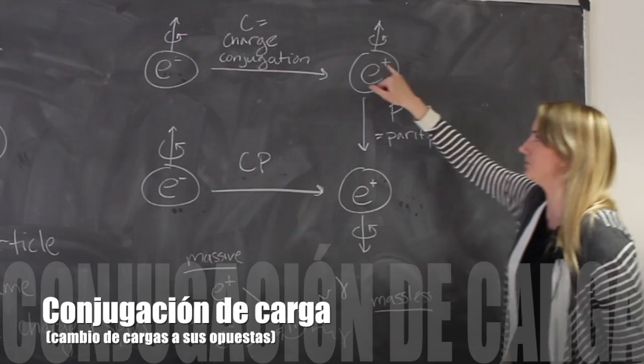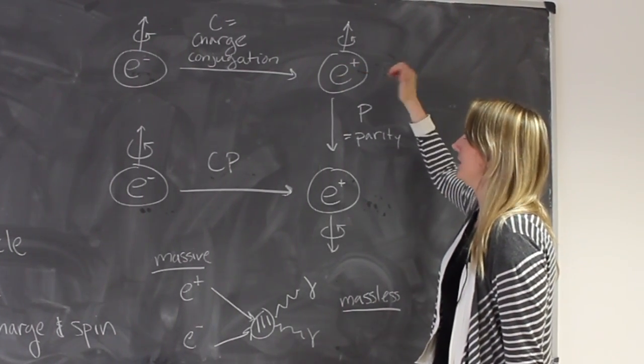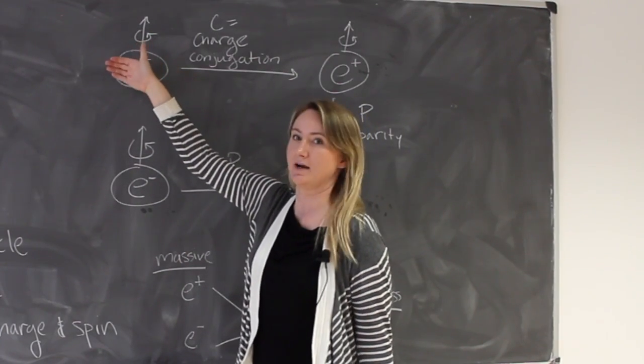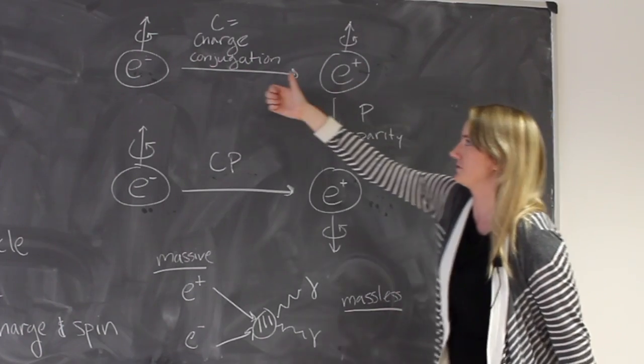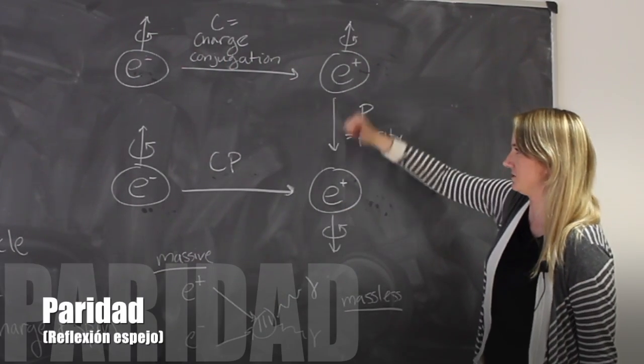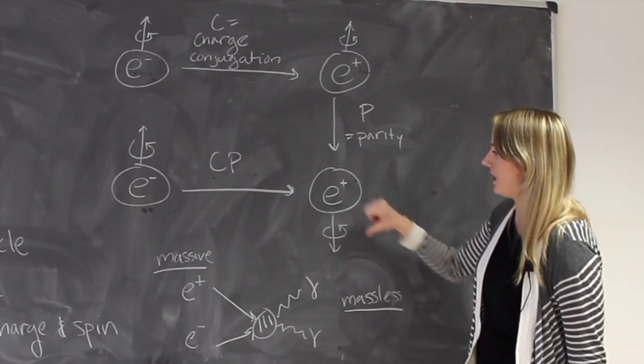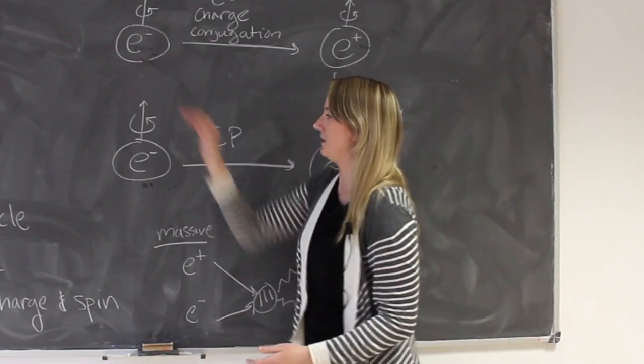You can think about the positron - if the electron is spinning so that if you take your right hand and point in the direction of the spin it points up, the positron after charge conjugation is still pointing up. Then you do a parity transformation so that from going up, now the positron is spinning down. This is now the antipartner to the original electron.